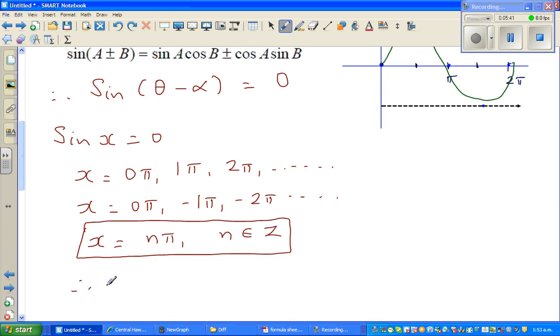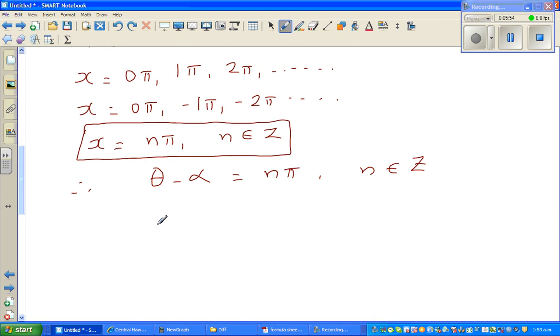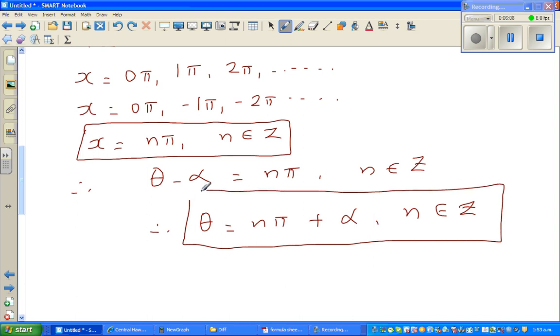So using the same principle, I can say θ minus α should be equal to nπ, where n belongs to Z. Now if you add α to both sides, therefore θ is nπ plus α, where n belongs to Z. So this is the general solution when tan θ can be expressed as tan α.